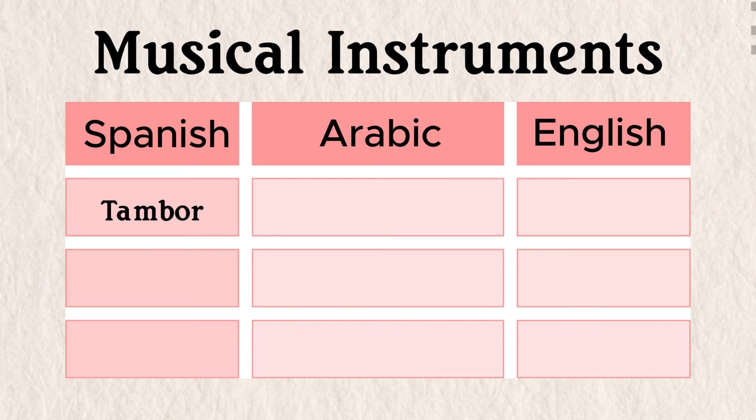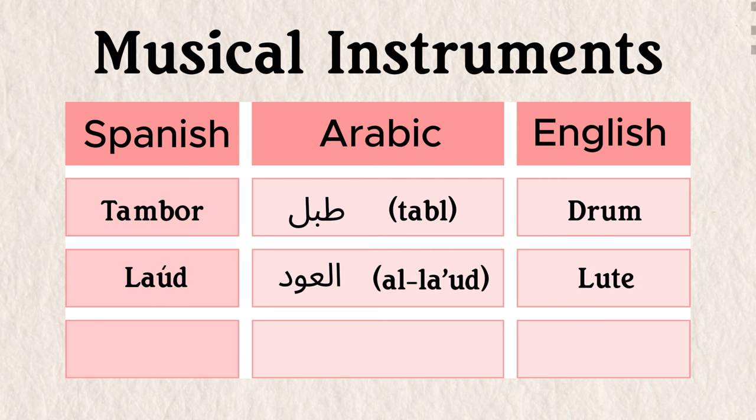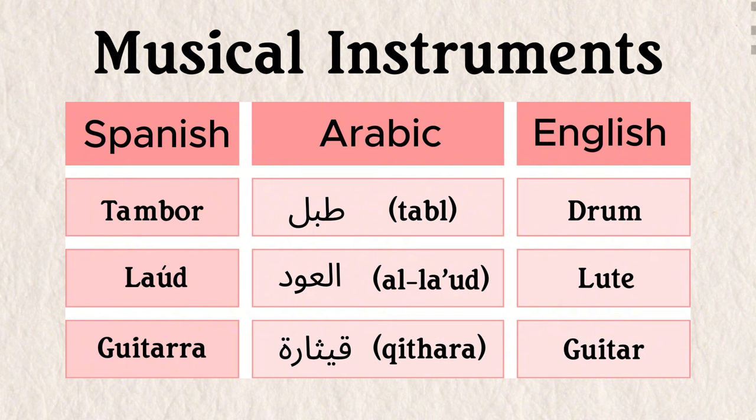Long before the Gypsy Kings sang Volare, Al-Andalus was famous for its musical prowess. This was largely due to the Arabs who brought rhythms and instruments like: tambor (drum) from ṭabl; laúd (lute) from al-ʿūd — which possibly developed into the modern guitarra (guitar) from kithara.